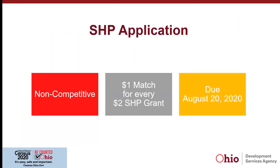Both of these programs have an income requirement at or under 35 percent of AMI, so it's important to do income verifications and have record of that in the client file. A great development for this year is that the SHP application will not be competitive, which is very unusual. It is more streamlined with fewer questions. We are maintaining the match — one dollar in match for every two dollars of the grant request. Applications are due August 20th and should open a few weeks after the HCRP application opens.